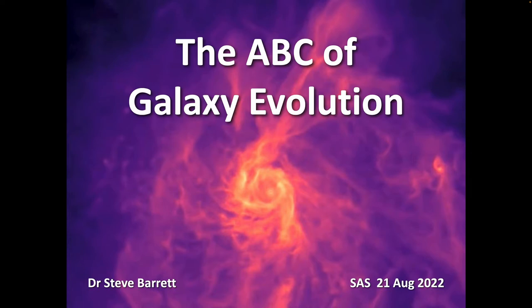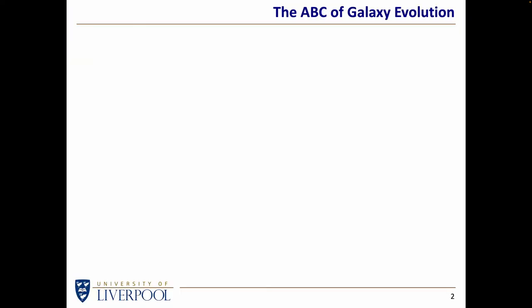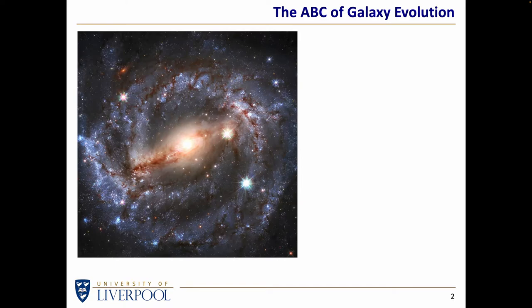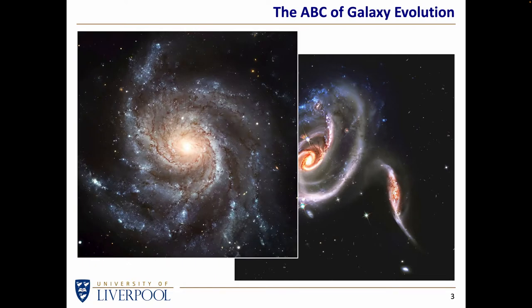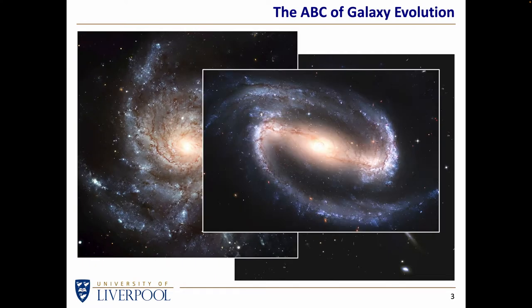Good evening everybody and thank you for the invitation to come and talk virtually to Sunderland AS. This is the ABC of galaxy evolution. We're all relatively familiar with the sight of a galaxy, whether from the Hubble Space Telescope or perhaps in the near future from the James Webb Space Telescope. We've seen lots of interesting galaxies with various types of structure. But the question is where did all these galaxies come from? That's what I'm trying to answer this evening.